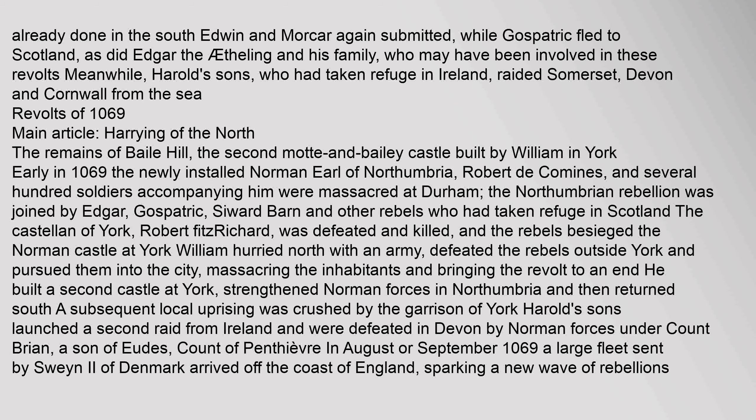Early in 1069, the newly installed Norman Earl of Northumbria, Robert de Comines, and several hundred soldiers accompanying him were massacred at Durham. The Northumbrian rebellion was joined by Edgar, Gospatric, Seaward Barn and other rebels who had taken refuge in Scotland. The Castellan of York, Robert Fitzrichard, was defeated and killed, and the rebels besieged the Norman castle at York. William hurried north with an army, defeated the rebels outside York and pursued them into the city, massacring the inhabitants and bringing the revolt to an end. He built a second castle at York, strengthened Norman forces in Northumbria and then returned south.